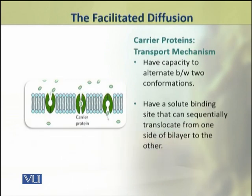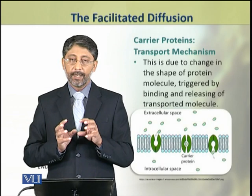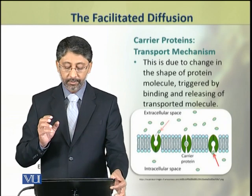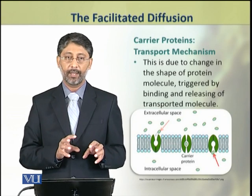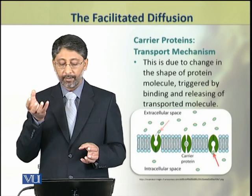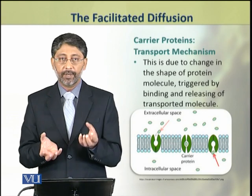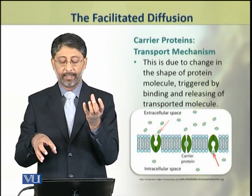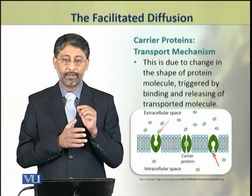The transport mechanism of these carrier proteins depends on their capacity to alternate between two conformations. They have a solute binding site that can sequentially translocate from one side of the lipid bilayer to the other. This translocation is due to the shape change of the protein molecule — when the solute binds to the molecule, its shape changes. If the solute is on the outer surface, it is transported inward. This happens because of the binding and releasing of transported molecules.